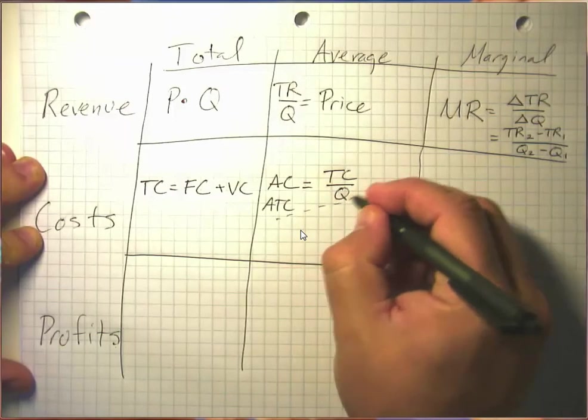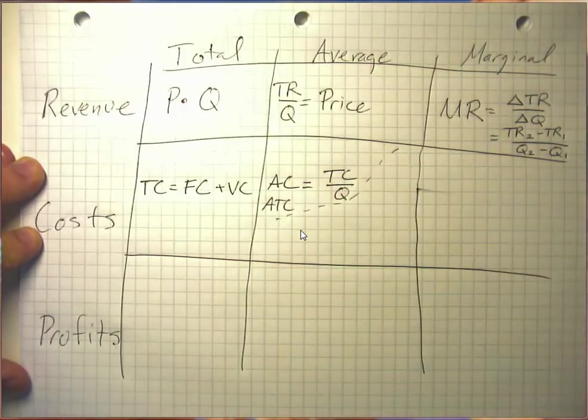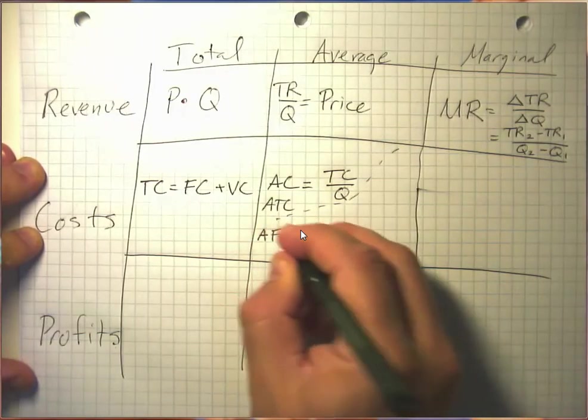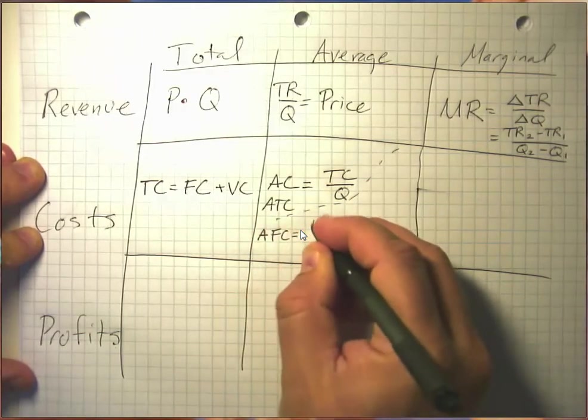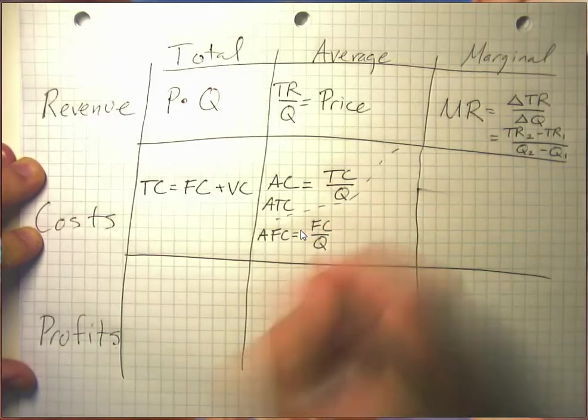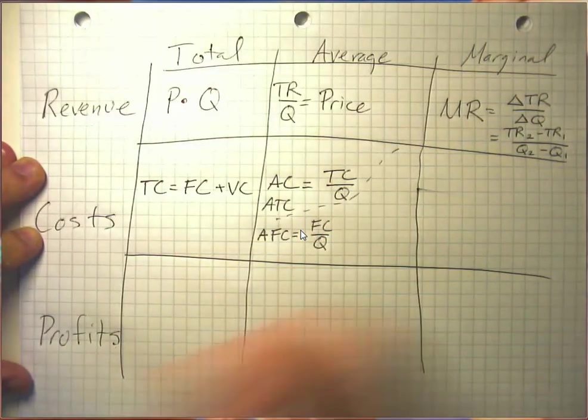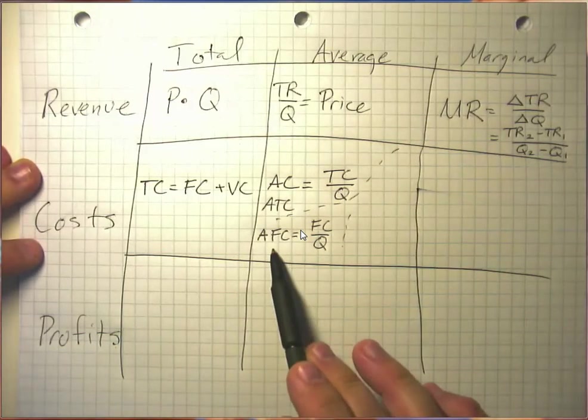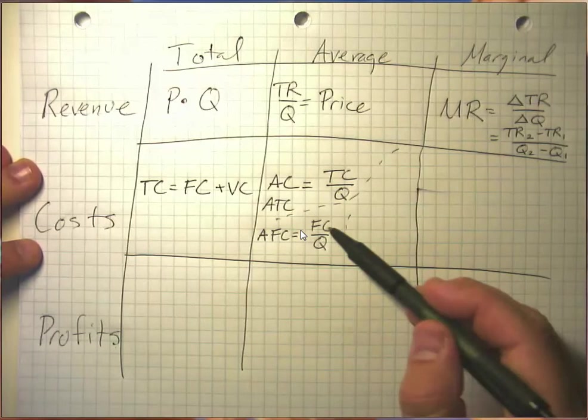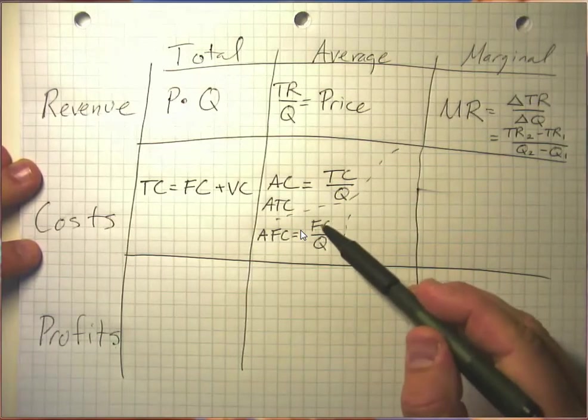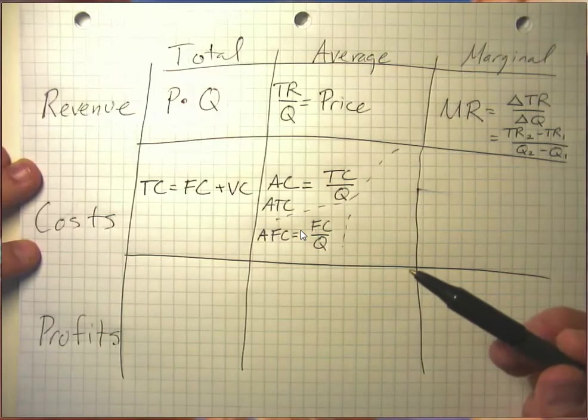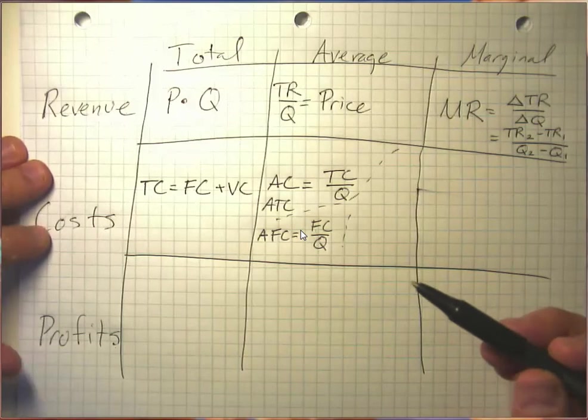There's a couple of other measures of average cost that we sometimes look at here. One is, what is our average fixed cost, AFC? So there we take our fixed costs and divide by the quantity we produce. That gives us an estimate essentially of what our overhead costs per unit are. And notice that since fixed costs are fixed, as long as quantity is increasing, average fixed cost per unit falls, because we're able to spread our overhead costs over more and more units.